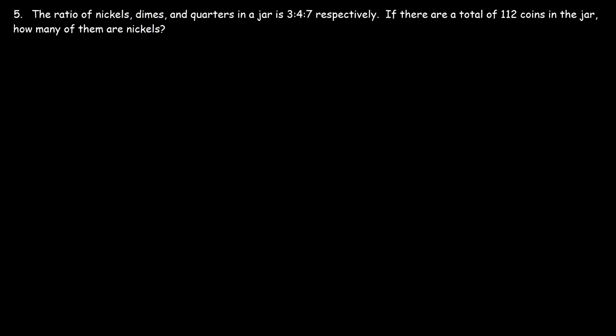Number 5. The ratio of nickels, dimes, and quarters in a jar is 3 to 4 to 7, respectively. If there are a total of 112 coins in the jar, how many of them are nickels? So this is a multi-step problem. Feel free to pause the video and try it. So we can set up many fractions to get the answer. We're going to have nickels, quarters, dimes. Or let me put nickels, dimes, quarters. Let me follow what we have here. And then I'm going to add another category. That is the total.